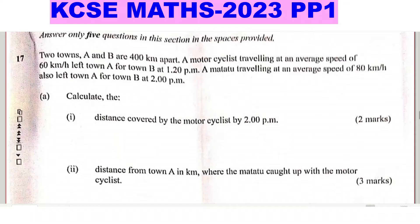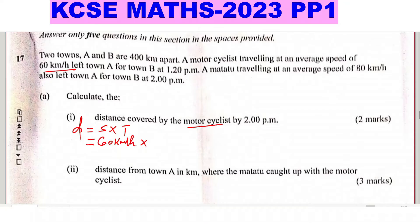To get the distance, we use: distance = speed × time. In this case we're looking at the motorcyclist. The speed of the motorcyclist is 60 kilometers per hour. For time, we consider that it left A at 1:20 PM and we are required to get the distance by 2 PM, so time will be given by the difference.